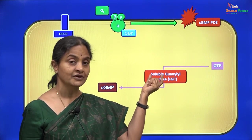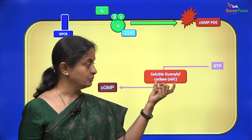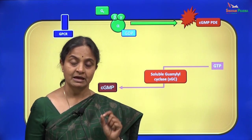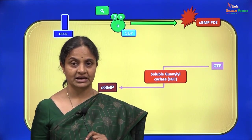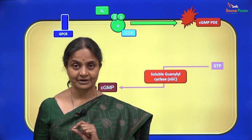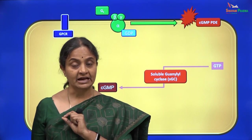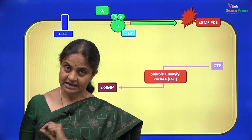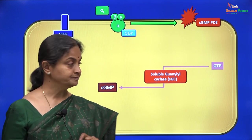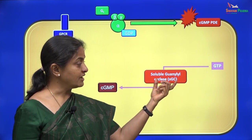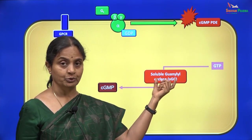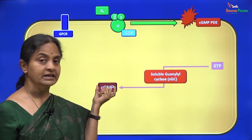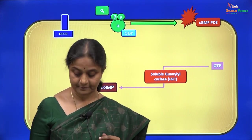This guanylyl cyclase has the adjective 'soluble.' Since it has an adjective, you must realize that there must be another guanylyl cyclase, and of course that is on the membrane, but that is not the G protein coupled enzyme here. We will discuss that a little later. Here we have soluble guanylyl cyclase which will increase cGMP levels within the cell.